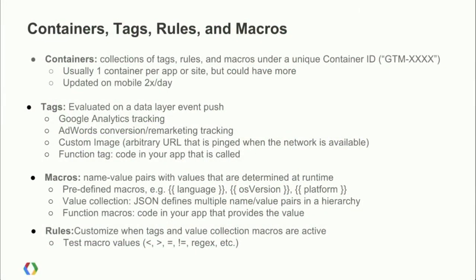Value collection macros are special in that they are how configuration values are accessible at runtime. When you call getString or getBoolean on your container, what we're looking for are macros in the value collection — basically JSON with multiple key-value pairs in a hierarchy. Just like the function tag runs custom code in response to a pushed event, similarly we have function macros, which are custom code that executes for a particular macro you've registered. You register to handle a particular kind, and when that kind happens, it calls back into your application and asks for a value.